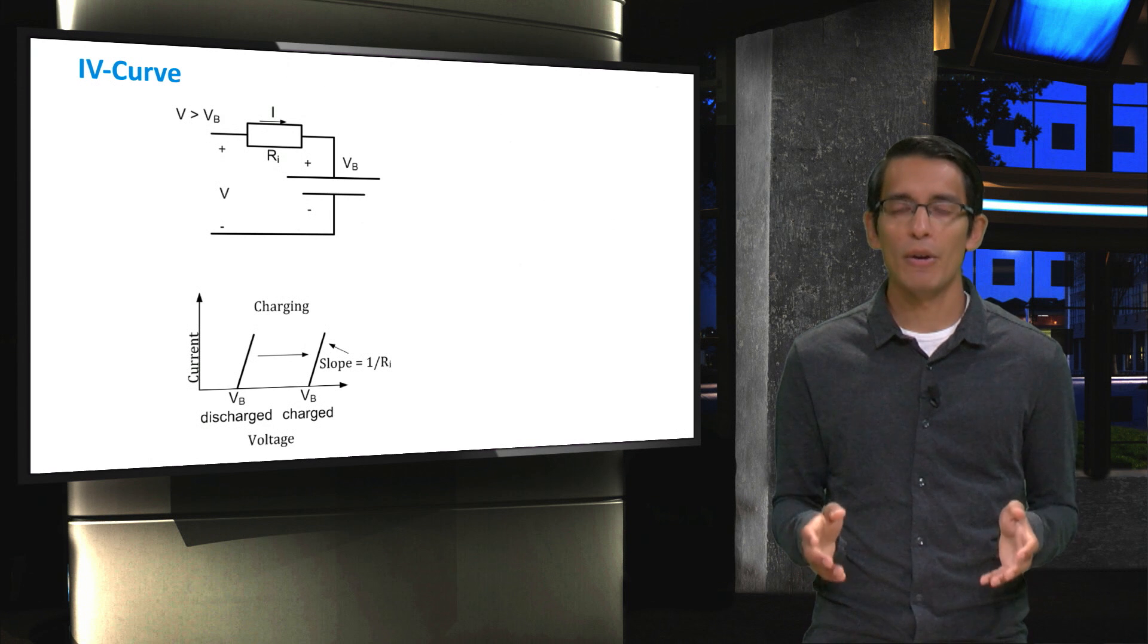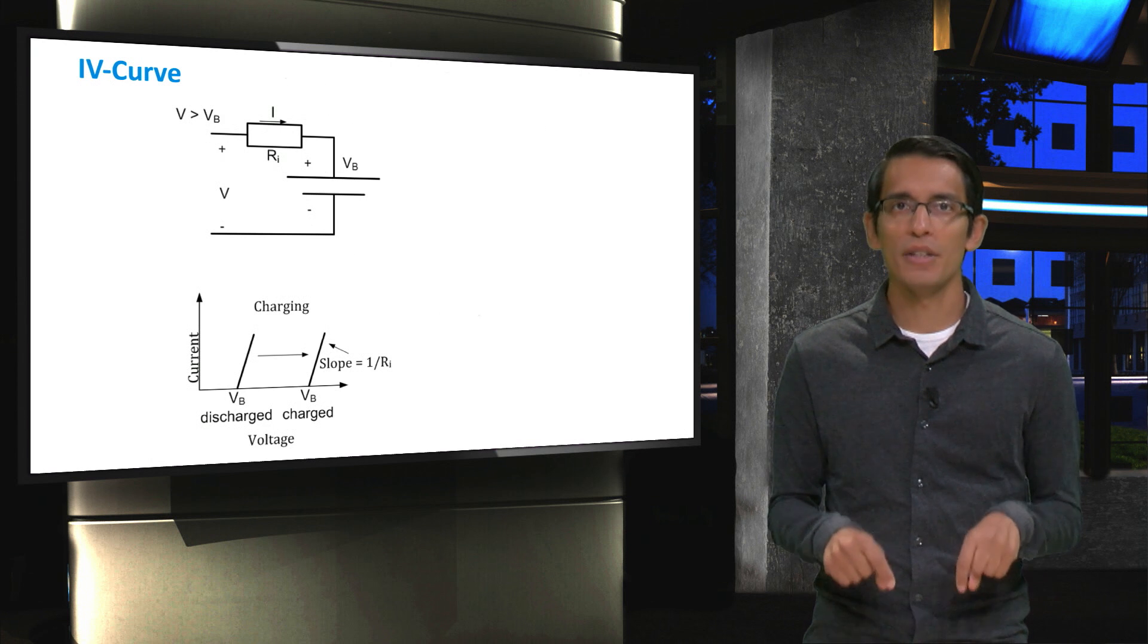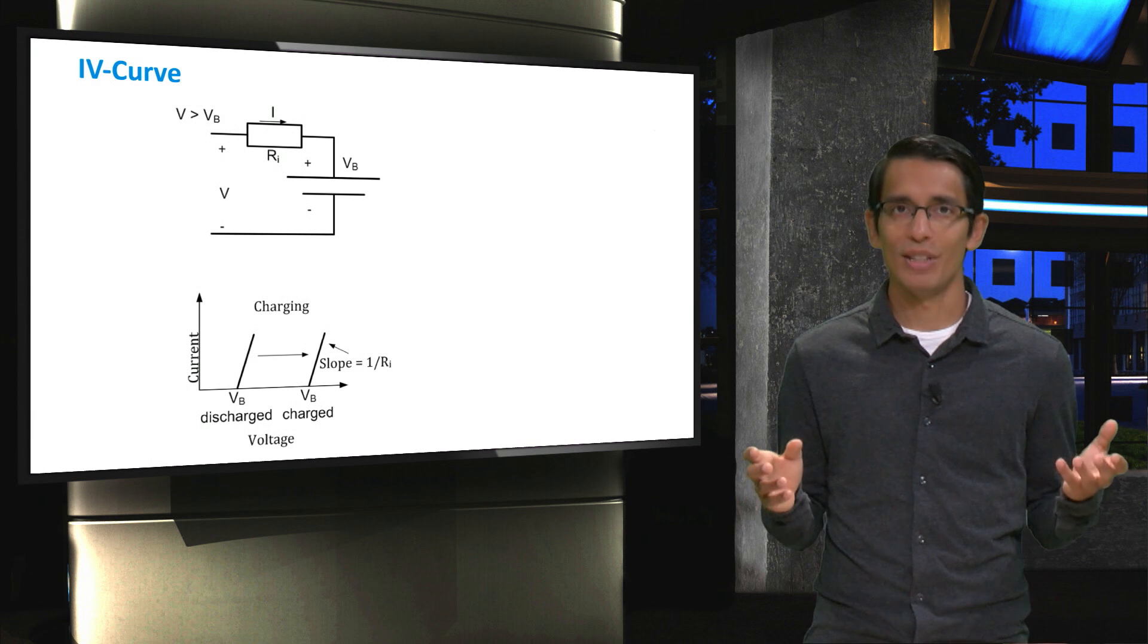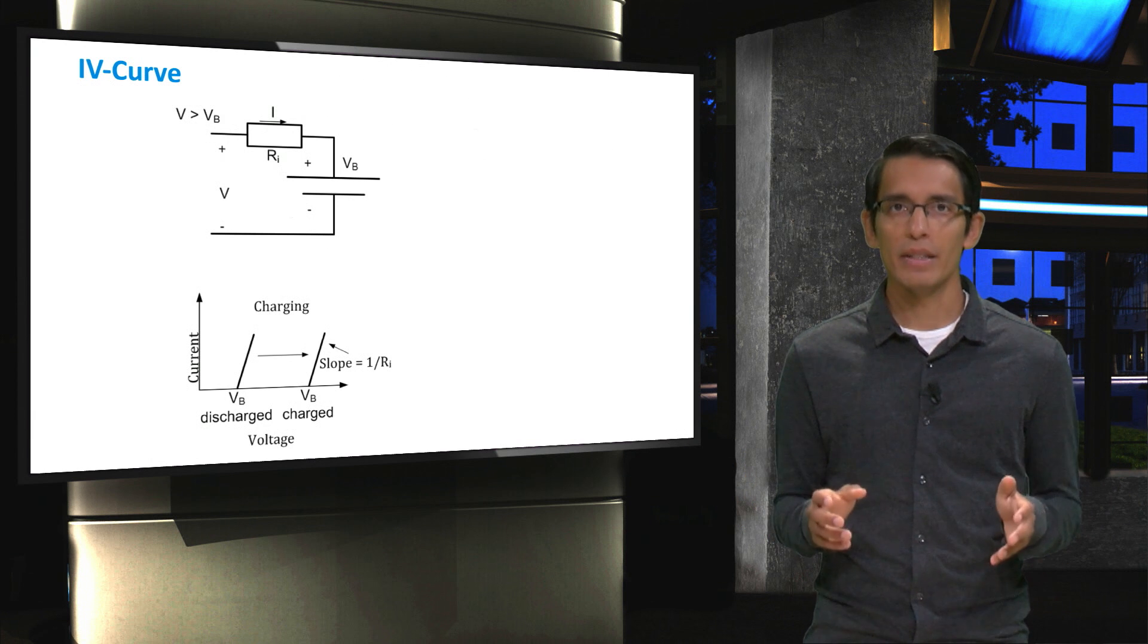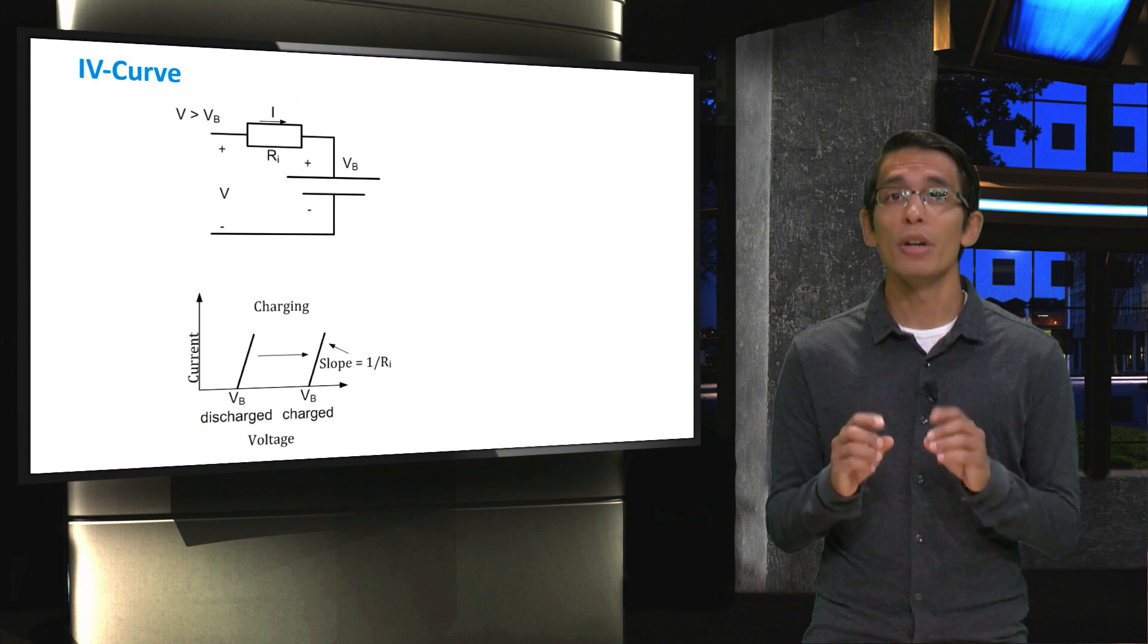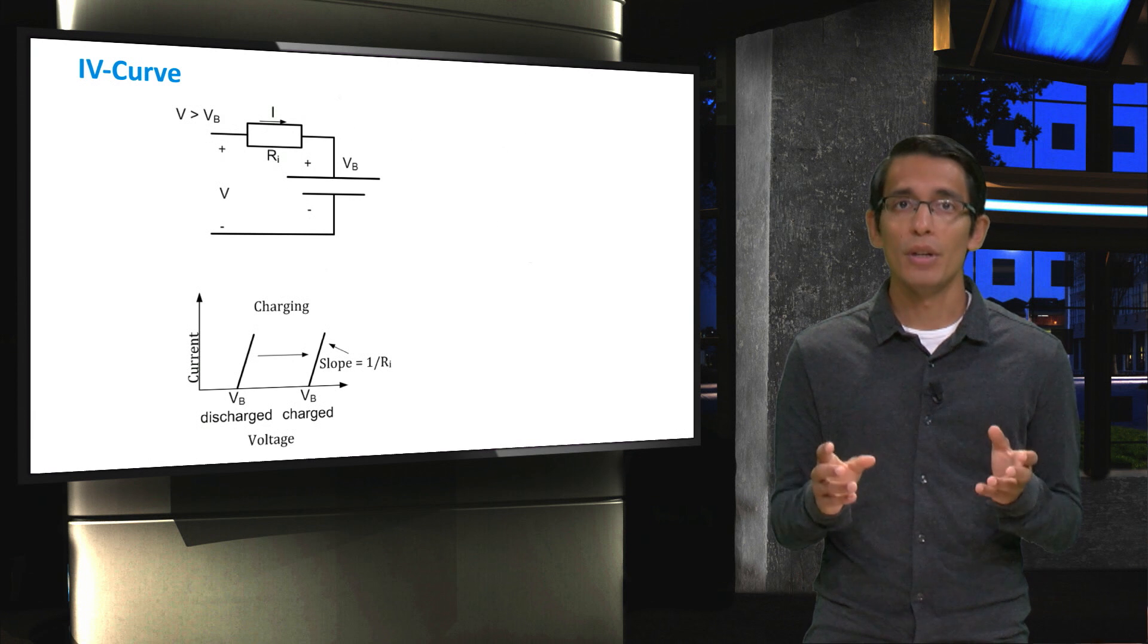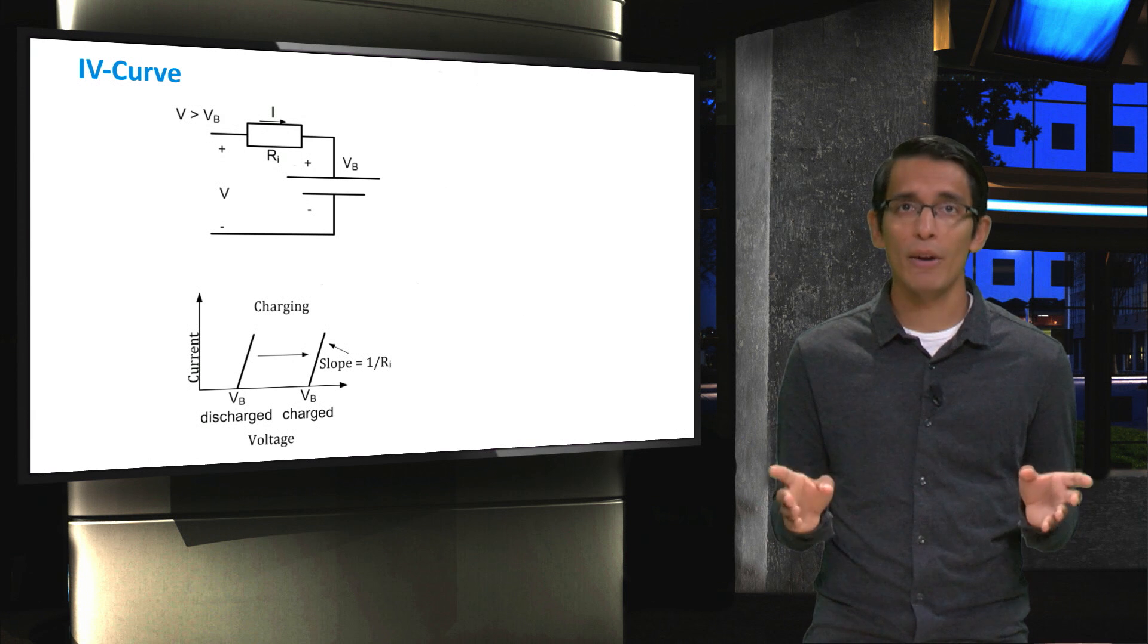Here we can see the model of a battery that is charging. You can tell it is charging because the current, I, is flowing into the positive terminal of the battery. Because of this, there will be a voltage drop over the series resistance. This means that the voltage you will measure during charging, V, will be larger than Vb. Vb is only measured at the terminals of the battery when the current flowing into or out of the battery is zero.